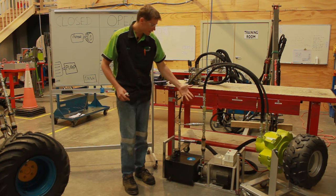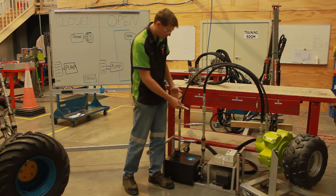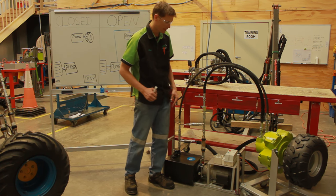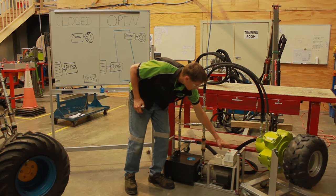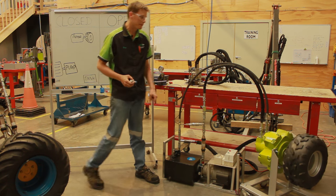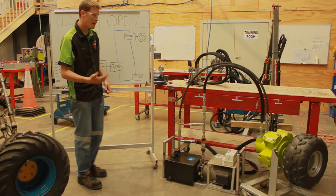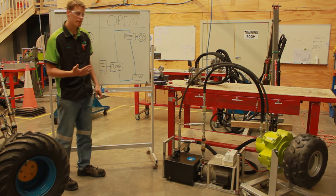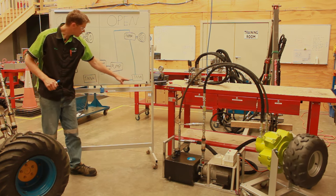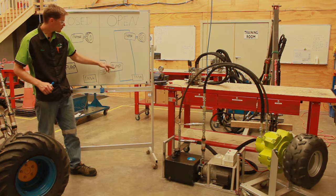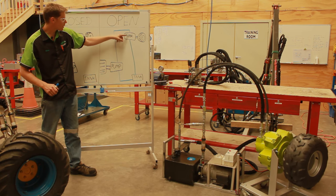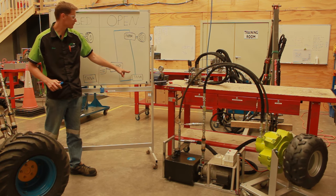Now if I start this up, I would expect to see the pump oil flow come through and start turning that wheel. And we can see that that's now happening. So my path of oil, in my loop, comes from the tank, sucked into the pump, pushed out through the motor, and back into the hydraulic tank.